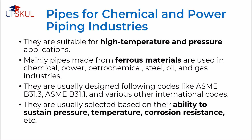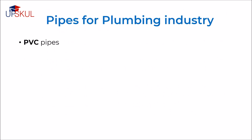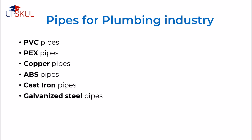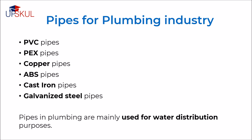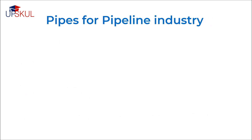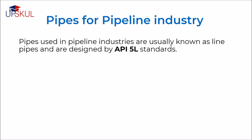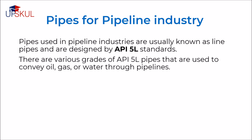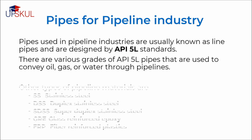Common plumbing pipes are PVC pipes, PEX pipes, copper pipes, ABS, cast iron and galvanized steel pipes. They are mainly used for water distribution purposes. Pipes used in the pipeline industries are usually known as line pipes and are designed by API 5L standards. There are various grades of API 5L pipes that are used to convey oil, gas or water through pipelines. Other types of pipeline materials are stainless steel, duplex stainless steel, super duplex stainless steel, glass reinforced epoxy, and fiber reinforced plastics.